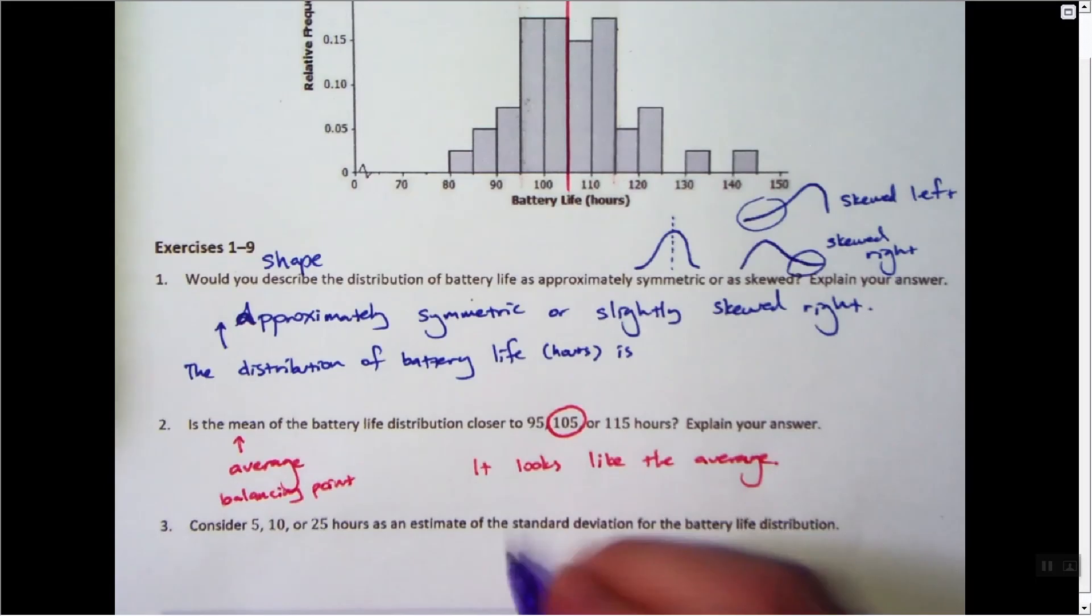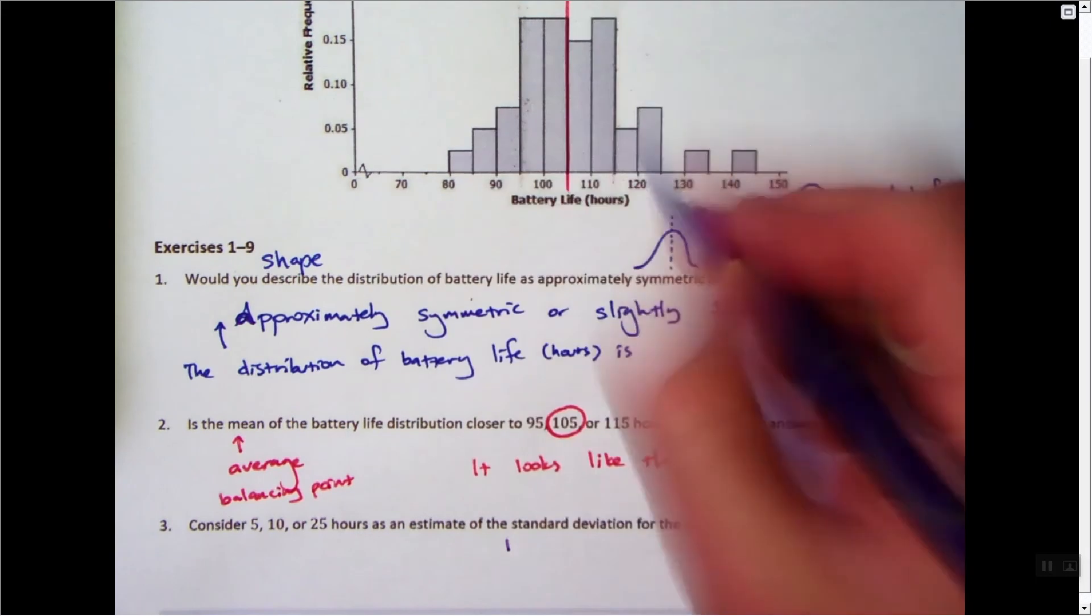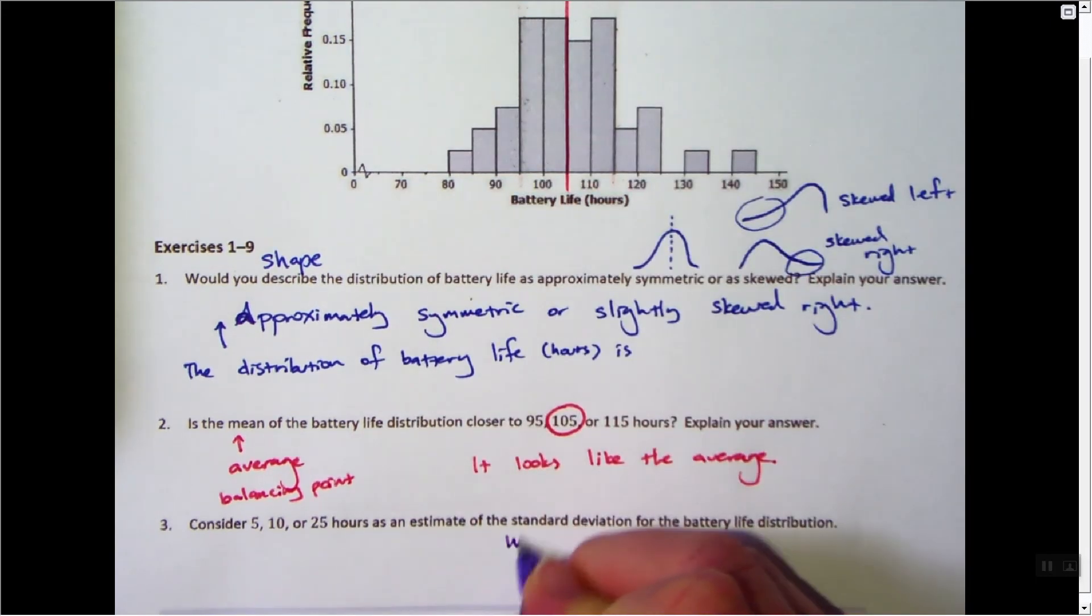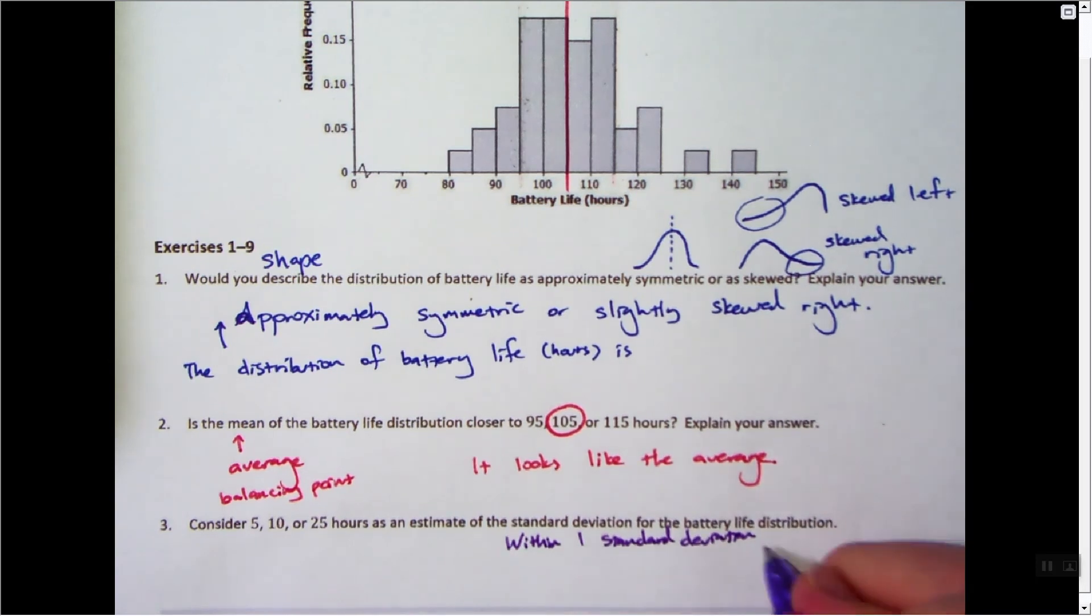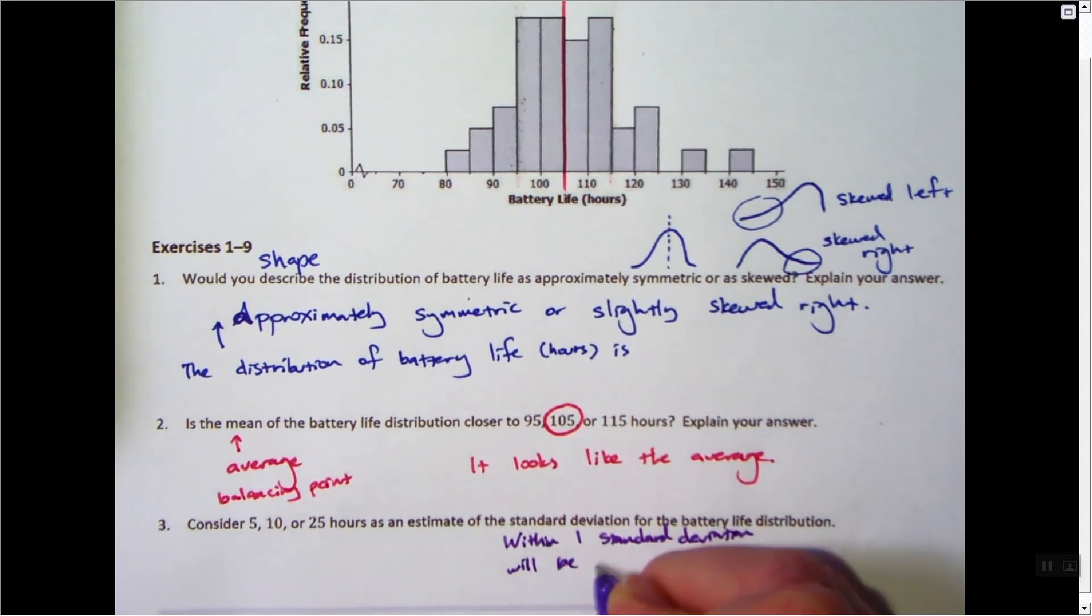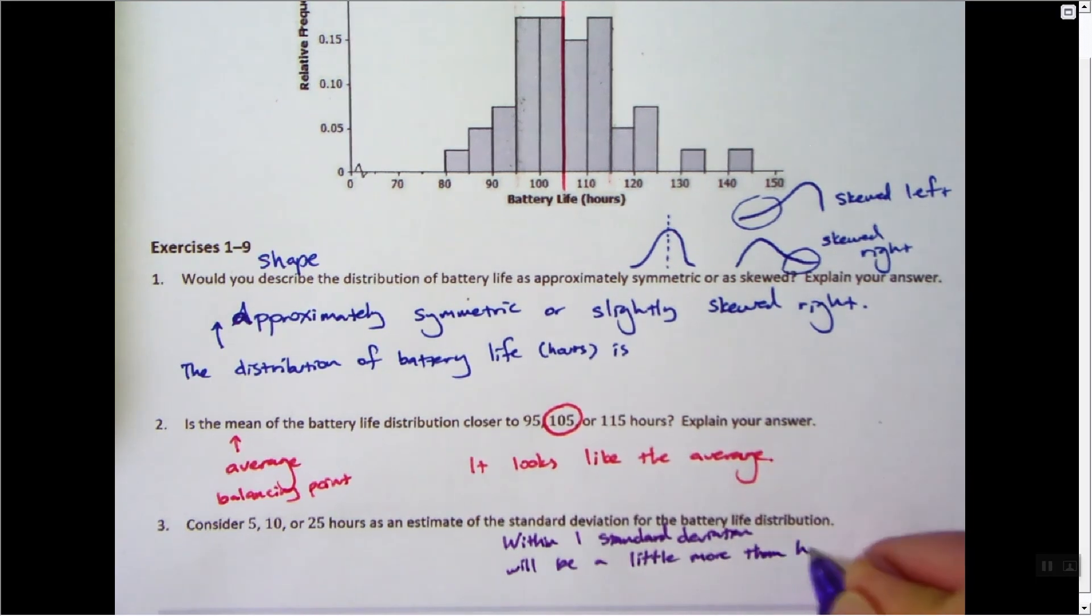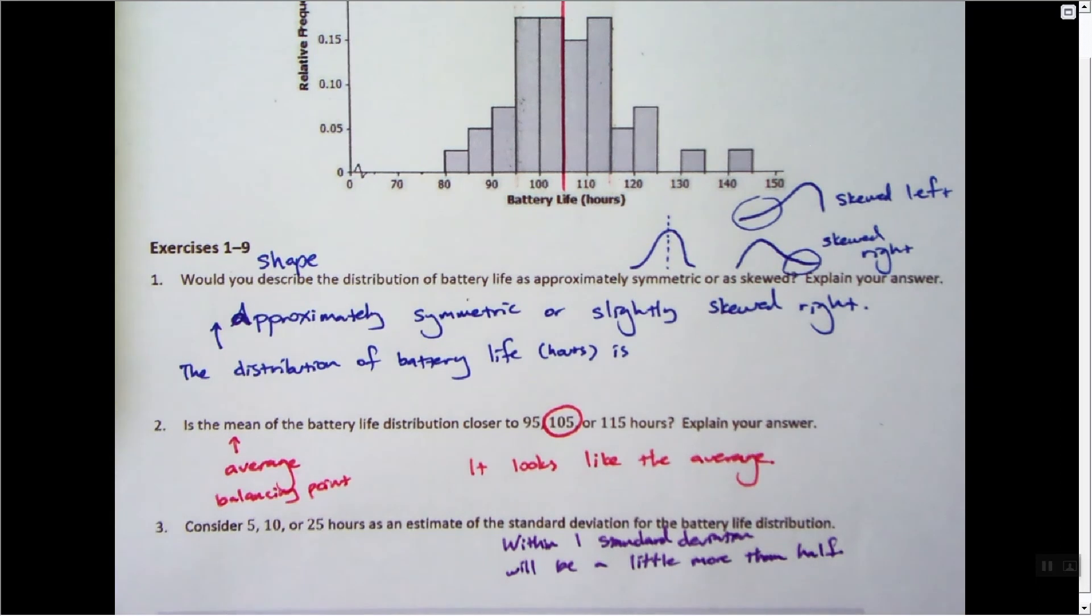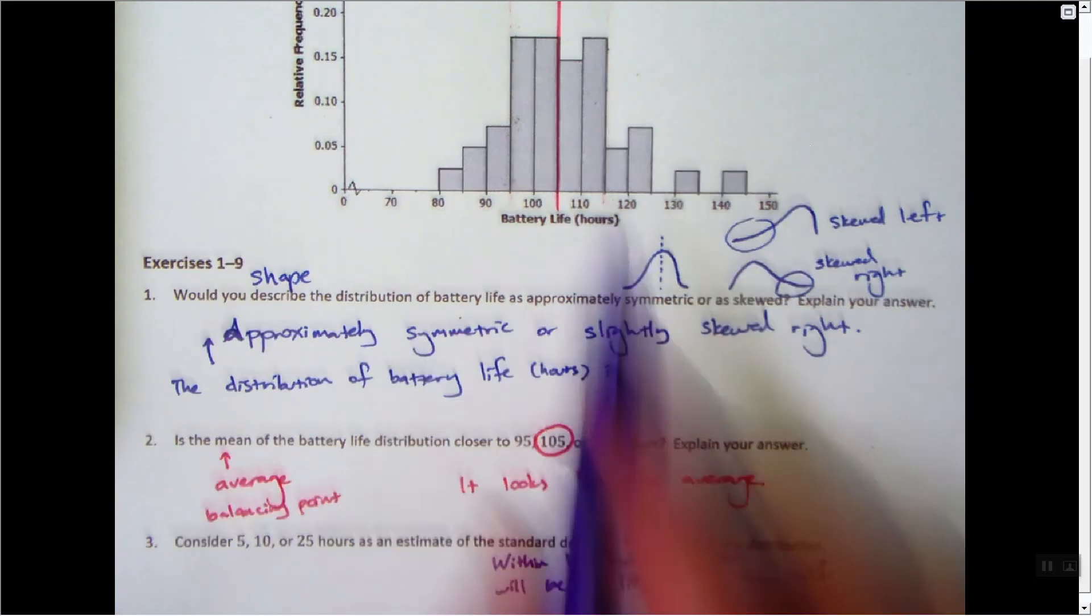I'll also tell you that within one standard deviation, if it's symmetric and unimodal, meaning it's kind of like this one is, within one standard deviation you'll have a little more than half. It's 68% of the data is a better estimate, but that's a rule of thumb that we can use if it's symmetric, like it is in this one.